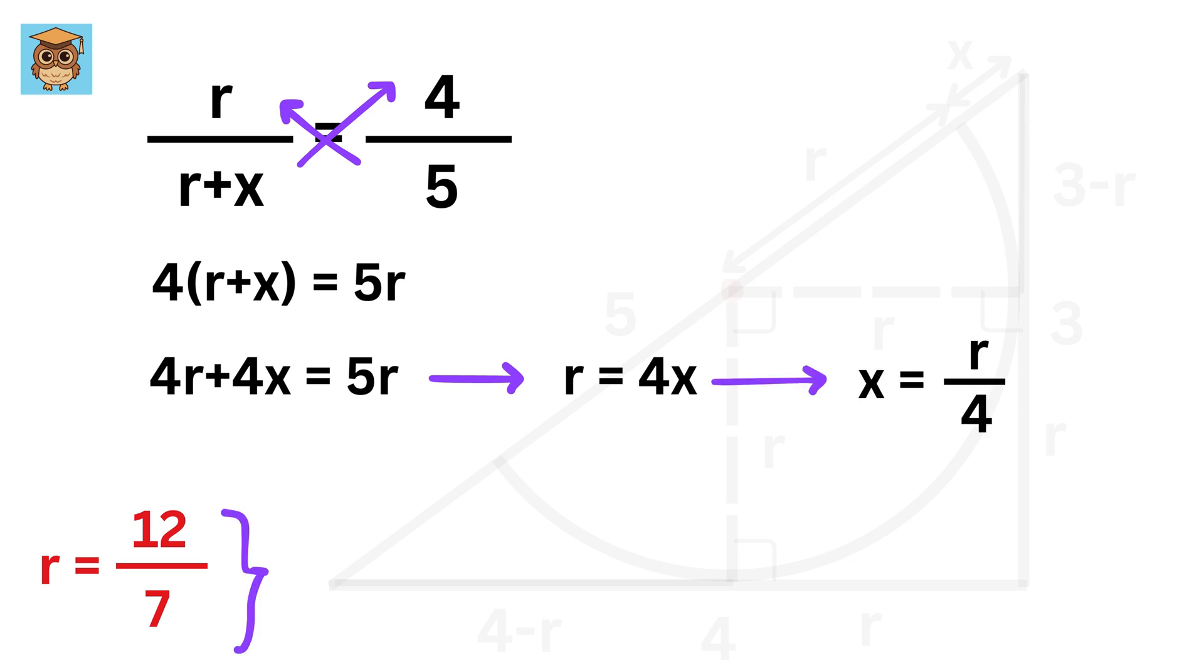Now R is 12 over 7, so X will be 12 over 7 upon 4, or 3 over 7. This is the answer to this question. So good!